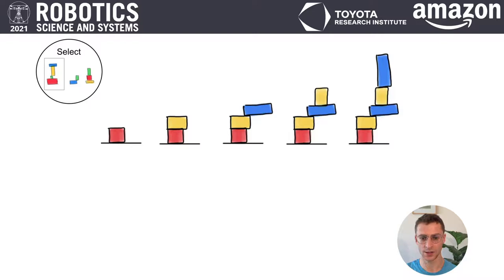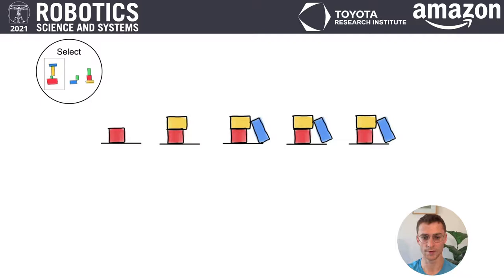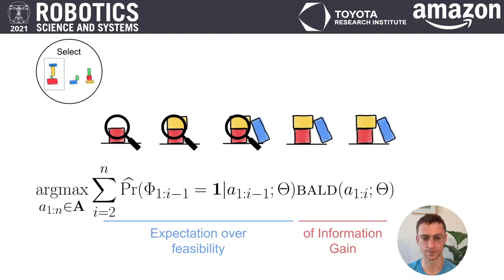We sample and score plans to find maximally informative experiments. However, since a plan execution could fail in any step, longer plans are less likely to be feasible. Additionally, when a plan fails early, we do not observe action outcomes after the plan failure. Fortunately, our learned plan feasibility model can help here. We score plans based on the expected information gain, considering the feasibility of each subplan.